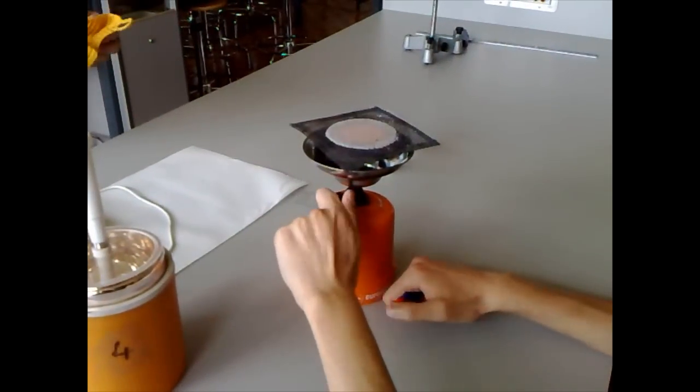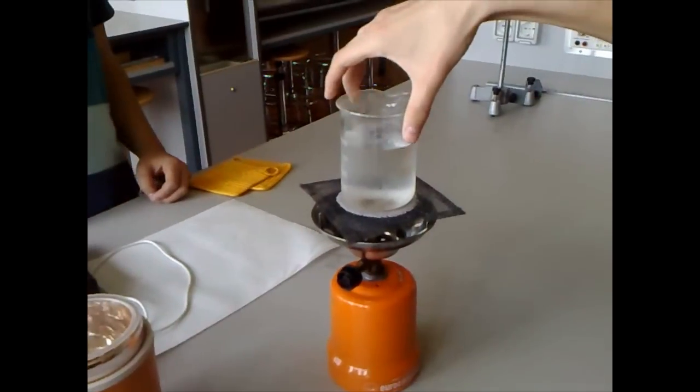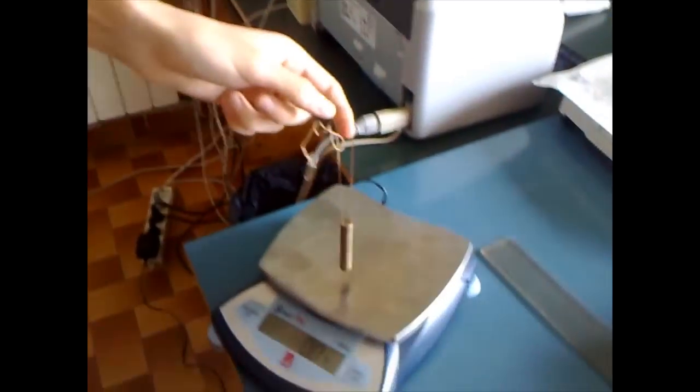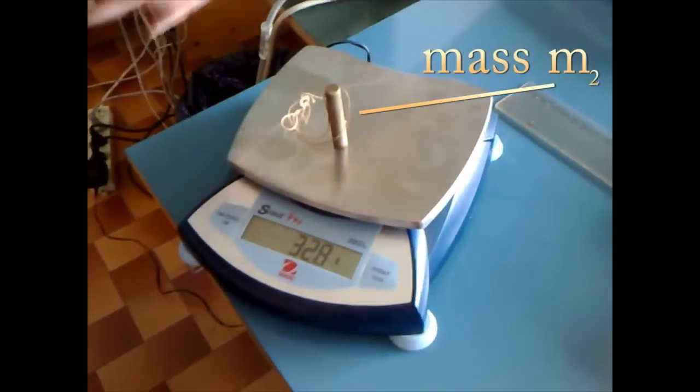Daniel turns on the gas stove and places the beaker on it. Matteo brings a mass of unknown material and weighs it. It is 32.9 grams.